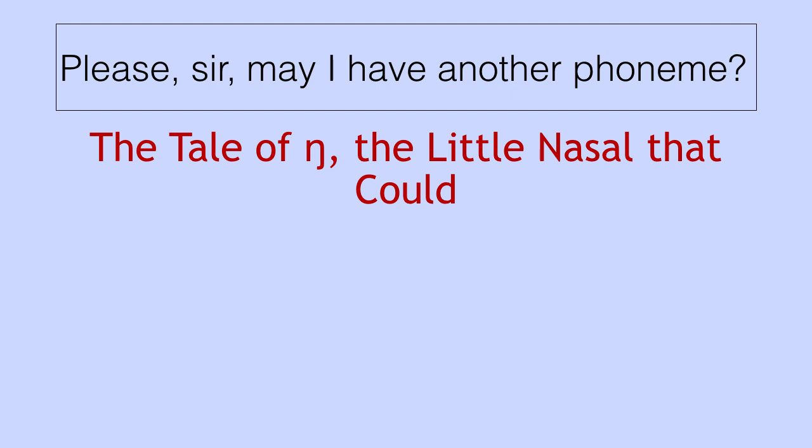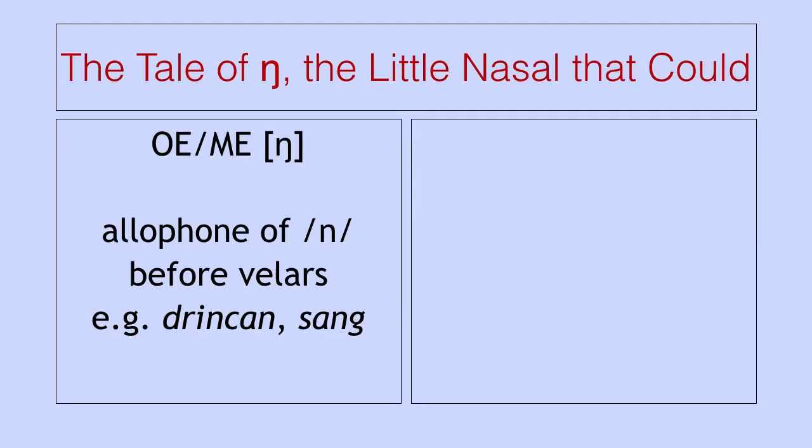The first one I want to talk about is the velar nasal, the ŋ sound. You may remember that the ŋ sound — the velar nasal — has been around in English from the beginning. So in Old English and Middle English, you had this sound, but it existed only as an allophone of the alveolar or dental n sound. When that n sound appeared before a velar stop — a k or a g — the n would be pronounced as a velar ŋ. So the Old English word to drink was 'brinken' with an n before the k, and the Old English word for song was 'song' with an n before a g sound.